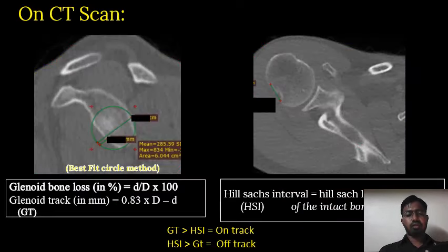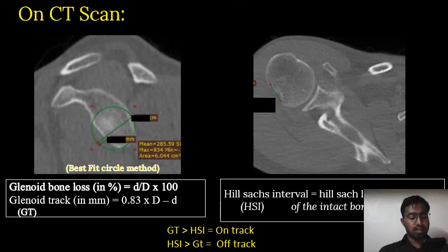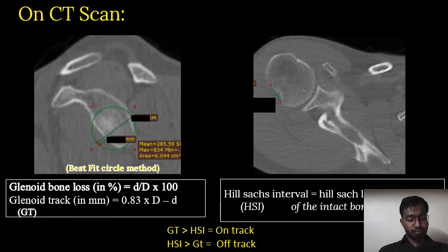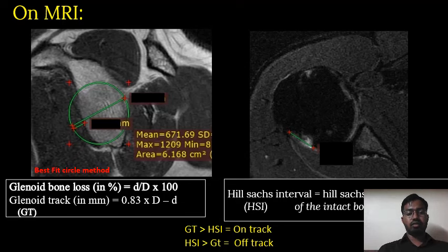Two measurements were used to determine whether a lesion was on-track or off-track: the glenoid tract and the Hill-Sachs interval. For glenoid bone loss, a best-fit circle is drawn along the posterior and caudal margins of the glenoid. A horizontal line is drawn through the center of the circle perpendicular to the long axis of the glenoid, estimating the width of the intact glenoid. A second horizontal line is drawn at the same level from the anterior border of the glenoid to the anterior aspect of the circle, indicating the amount of glenoid bone loss. The glenoid tract is then calculated as 0.83 × (width of the intact glenoid minus the width of the glenoid bone loss). The Hill-Sachs interval is measured as the width of the Hill-Sachs lesion plus the width of any intact bone bridge between the lateral margin of the lesion and the rotator cuff insertion. A similar method was used to estimate glenoid bone loss and Hill-Sachs interval on MRI.